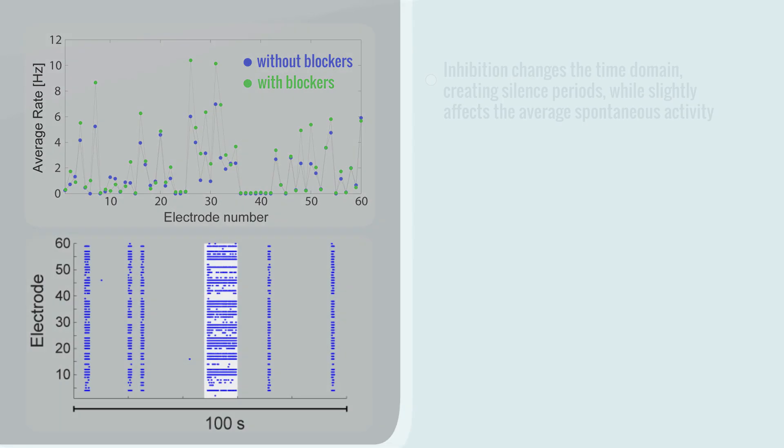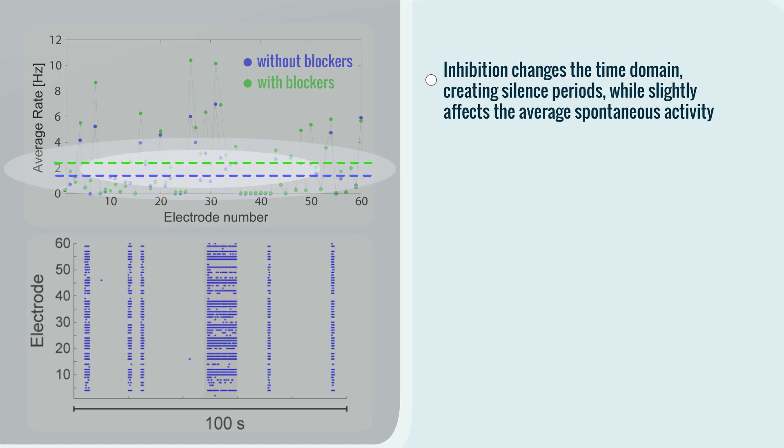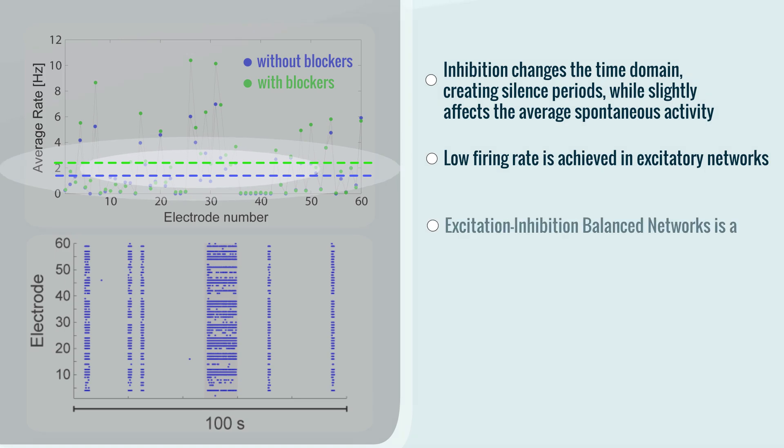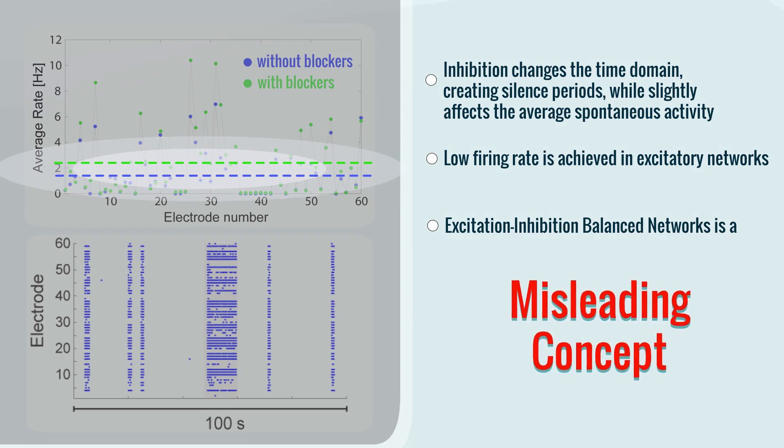In conclusion, inhibition changes the time domain, creating silence periods, while slightly affecting the average spontaneous activity. Low firing rate is achieved in excitatory networks. Excitation-inhibition balanced networks is a misleading concept.